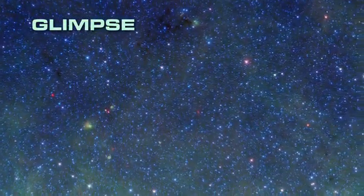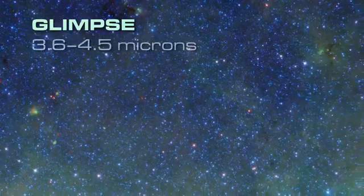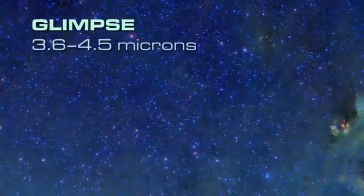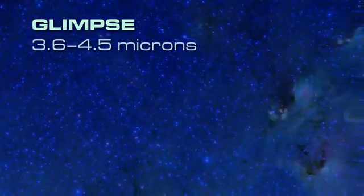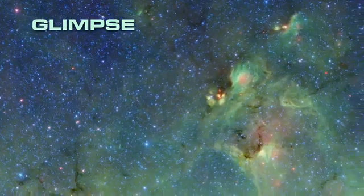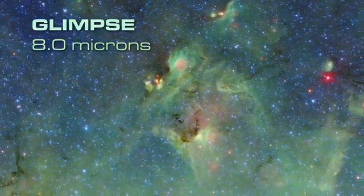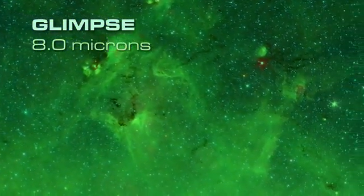The Glimpse part of the survey includes the shorter infrared wavelengths. At 3.6 and 4.5 microns, we see blue stars that, in visible light, are completely hidden by dust. Carbon-based dust molecules show up at 8 microns, represented as green.